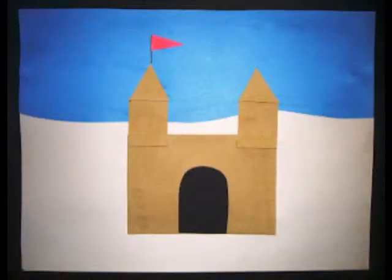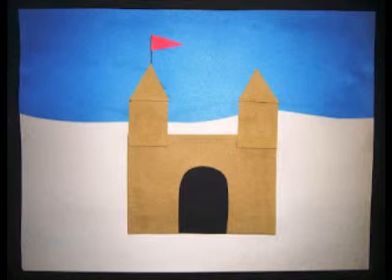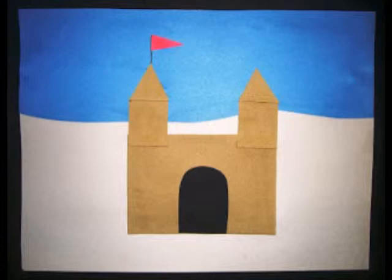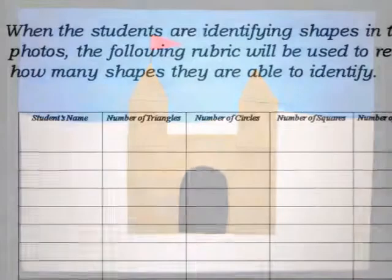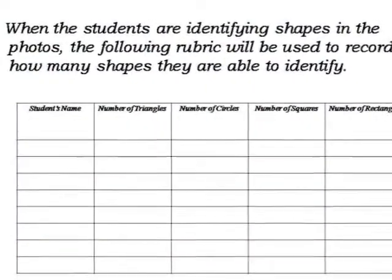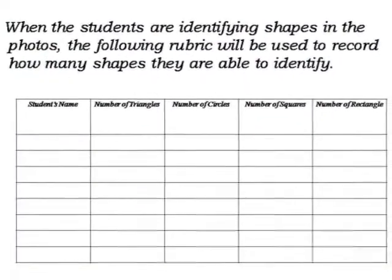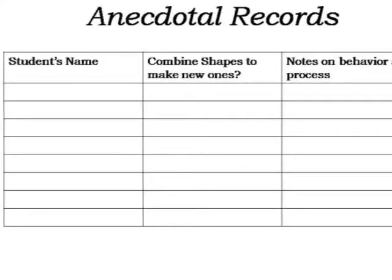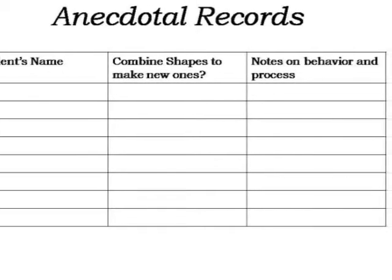Students will then be asked to use these pieces of sandpaper to construct their own sandcastle. They can also use construction paper to create a background. The teacher can provide scaffolding to ensure that students are understanding how to construct new shapes out of smaller shapes. Students will then be assessed by the number of shapes they are able to identify in independent practice and also by their behaviors when constructing new shapes while making the sandcastle.